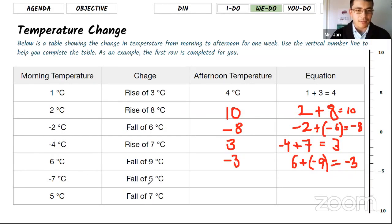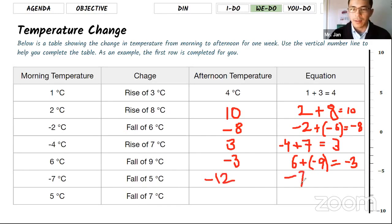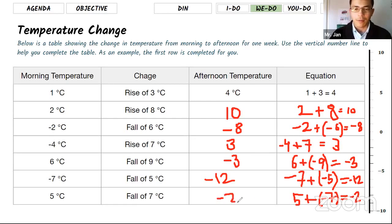Last two: morning was negative 7 and it went down again by 5 degrees. It is negative 12 — you started at negative 7 and it went down another 5 degrees, so it keeps going down to negative 12. For the last row, some of you already typed it: it is negative 2. It started at 5 and went down by 7 degrees, so now it's a cold negative 2.